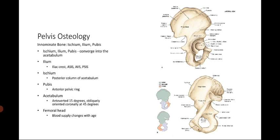You can also palpate anteriorly for the ASIS and the AIIS, and posteriorly for the PSIS. The ischium forms the posterior column of the acetabulum, while the pubis composes the anterior pelvic ring. For the acetabulum, it's usually anteverted 15 degrees and obliquely oriented at 45 degrees.